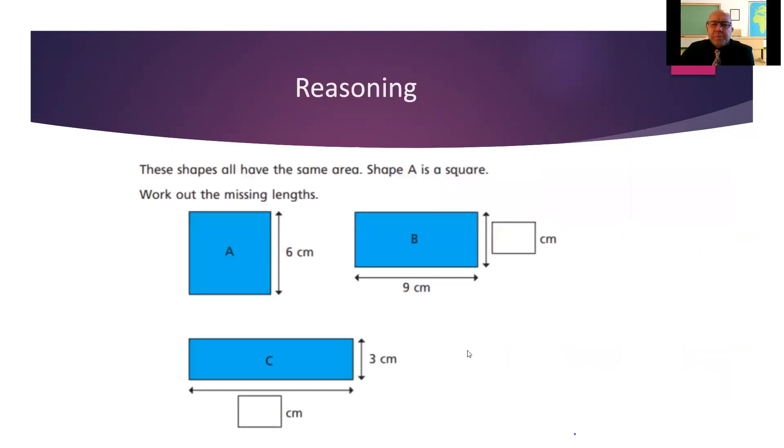Now, flashback to year four, when you've started looking at area. These shapes all have the same area, so they all cover the same amount of space. Shape A is a square. Now, we know there's a special quality about squares. Squares have equal lengths. So the fact that this side is 6 centimetres means that this side is also 6 centimetres. Can you remember how to work out the area of a rectangle? I'd like you to work out what these missing sides are going to be. Pause the video. Work it out.